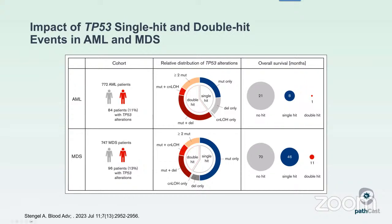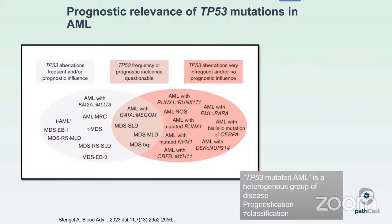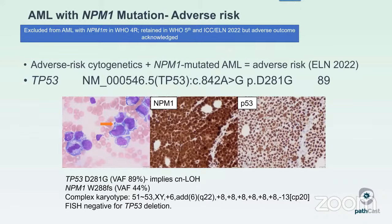The prognostic relevance of TP53 mutation in AML is not straightforward. If you have a core binding factor AML or AML with PML-RARA and a TP53 aberration, it seems to have no prognostic influence. But if you have therapy-related MDS or AML with KMT2A rearrangement, TP53 aberrations are actually more common and do have prognostic significance. There's also a middle category — like AML with MECOM rearrangement or MDS with single lineage dysplasia or DEL5Q — where it seems to have some prognostic influence but not as detrimental as the other group.